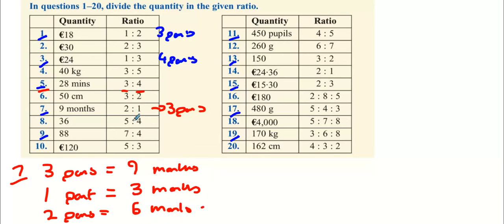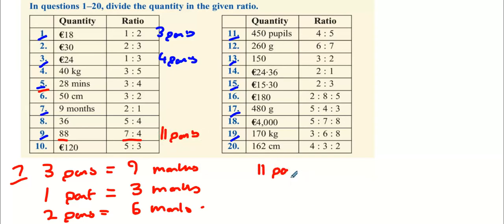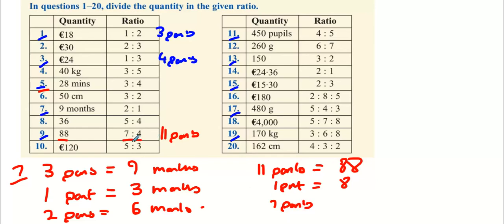It's a ratio of two to one, so that's six months and three months. Now question nine: 88. Add the seven and four together and you get 11 parts. So 11 parts equals 88 — divide both sides by 11, which implies one part is eight. Seven parts is seven multiplied by eight, which is 56. Four parts is four times eight, which is 32. So it's broken up into 56 and 32.